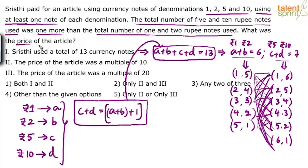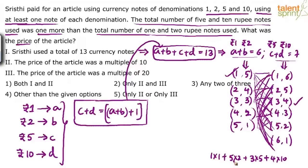For example, taking A=1, B=5, C=3, D=4 gives: 1×1 + 5×2 + 3×5 + 4×10 = 1 + 10 + 15 + 40 = 66 rupees. But there are many other possible prices. So statement 1 alone cannot give you the answer — it is ruled out.